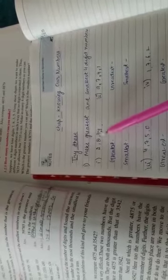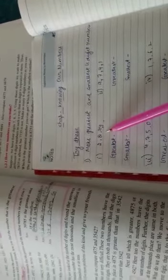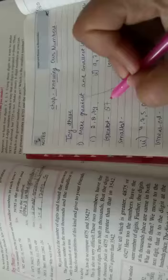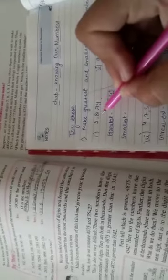The greatest number among these digits is 8. So we will start with 8. Less than 8, there is 7. We will write 7 here. Less than 7, here is 4. And less than 4, here is 2. So the greatest number we can make by using these digits is 8742.